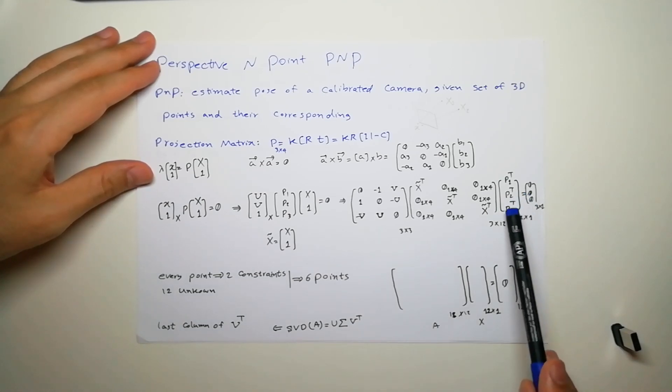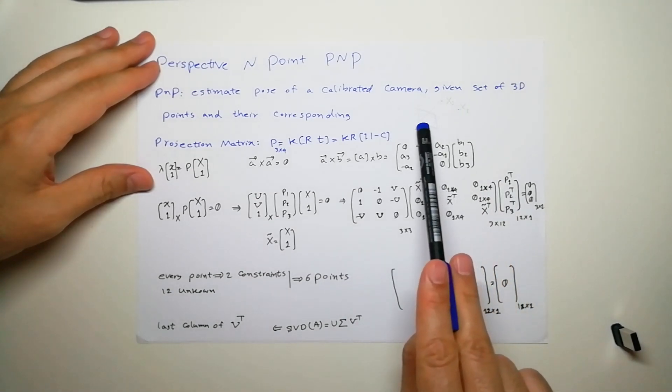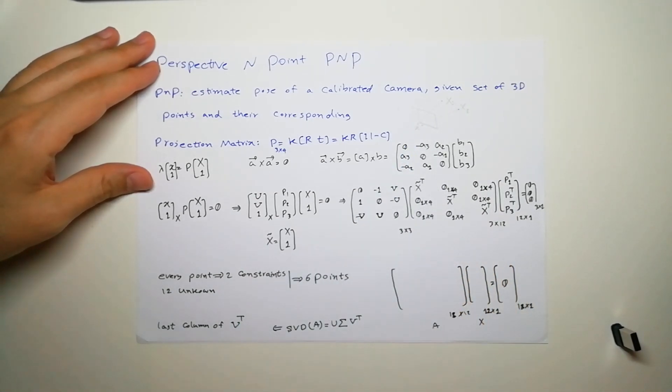We have 12 unknowns. Let's see how many points we need to find it. Every point gives us two constraints. If you have six points we can solve this problem.